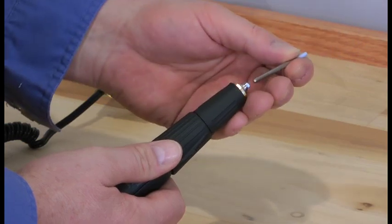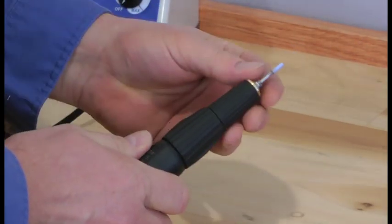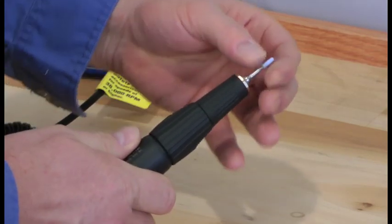You can pull out the burr, the collet's released. To put a new one in, just put it in, bring it over to secure and it's ready to go.